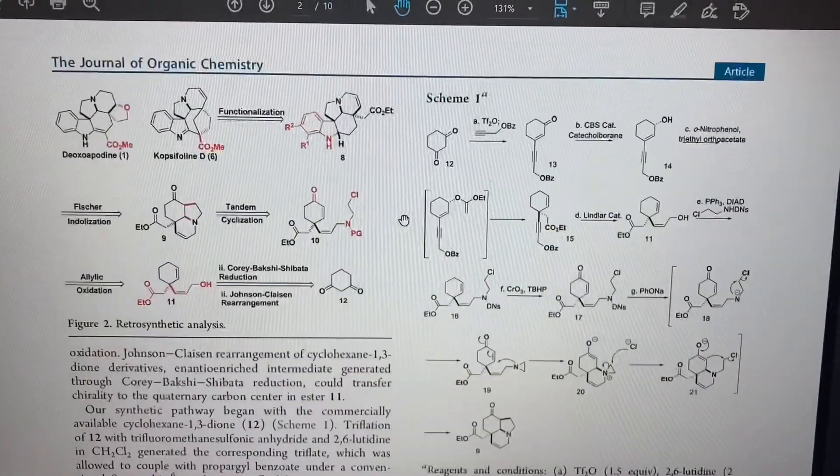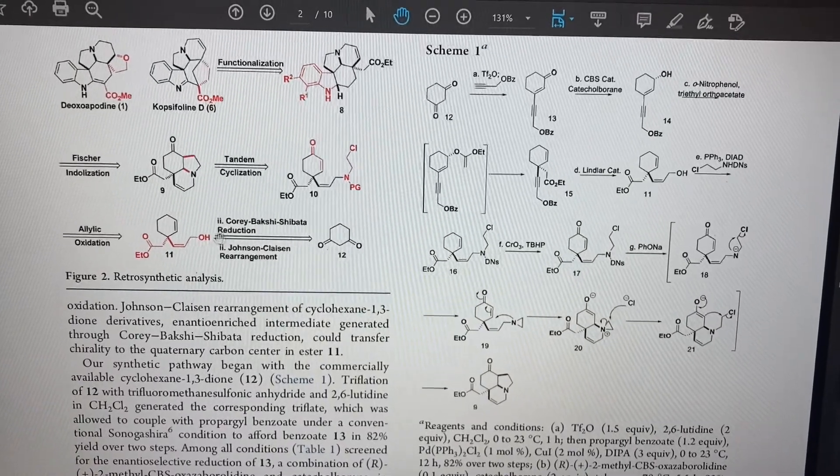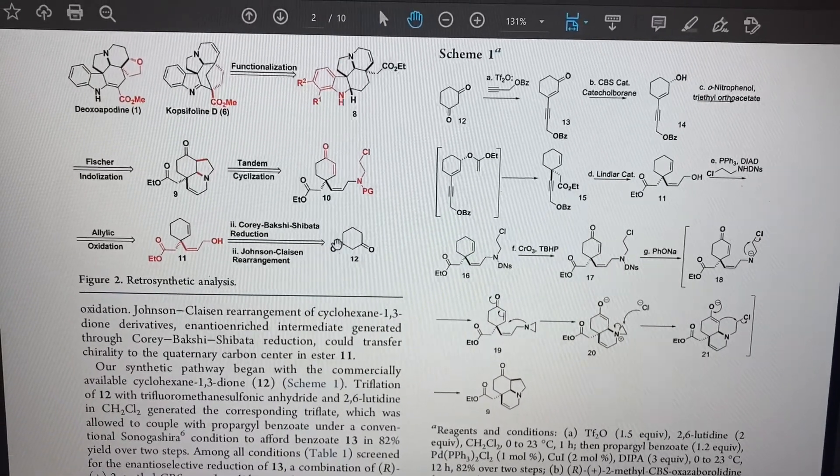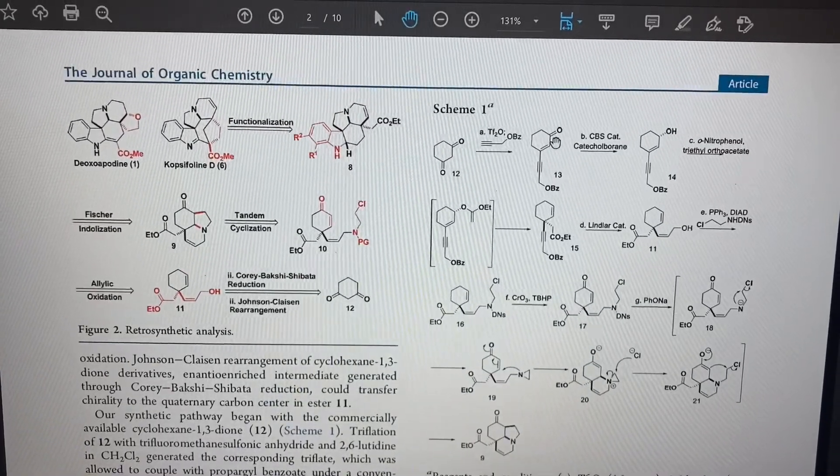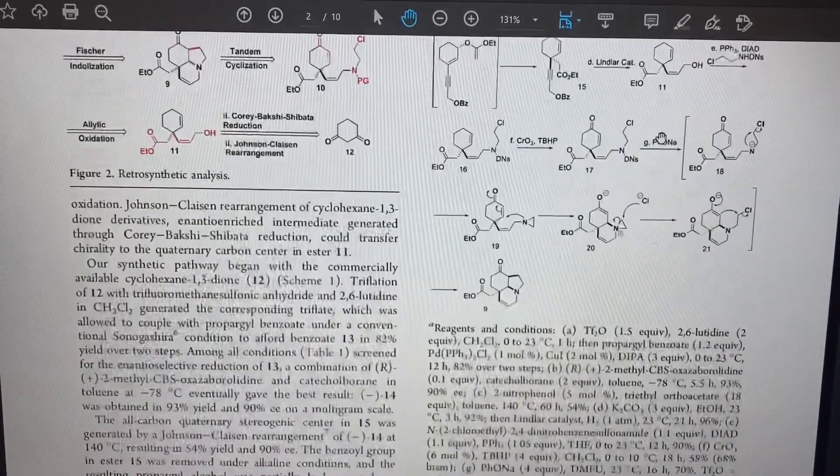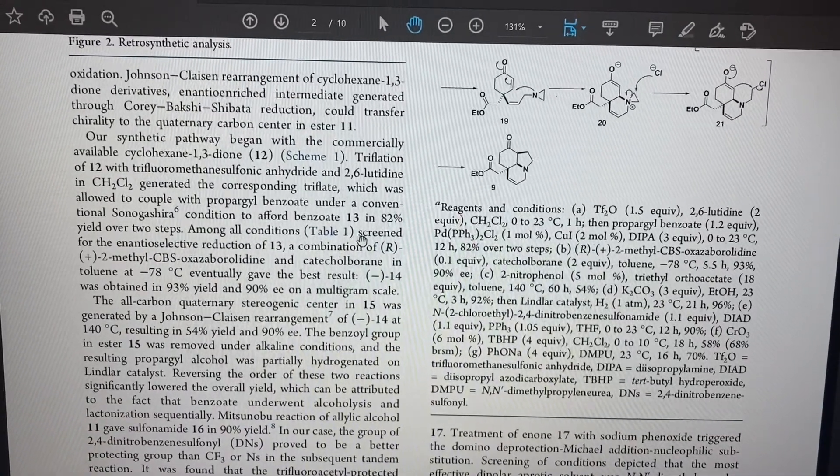The Corey-Bakshi-Shibata reduction is used here to get from this to this, and they also use the CBS catalyst to make this ketone into this alcohol. And to do this, they use the R configuration as seen right here.